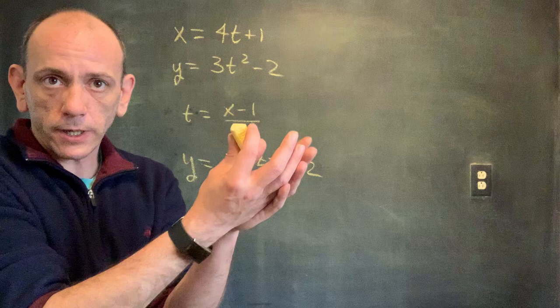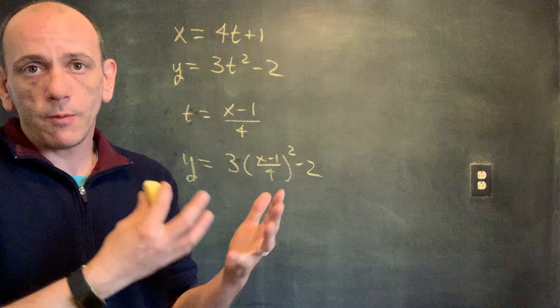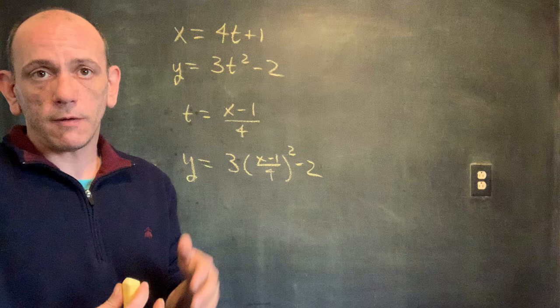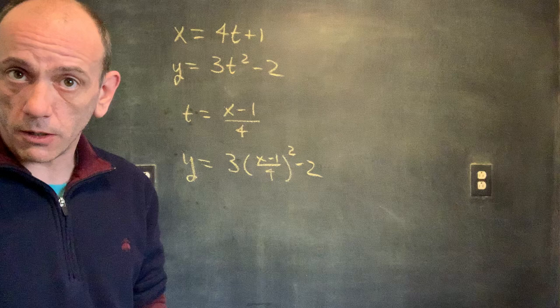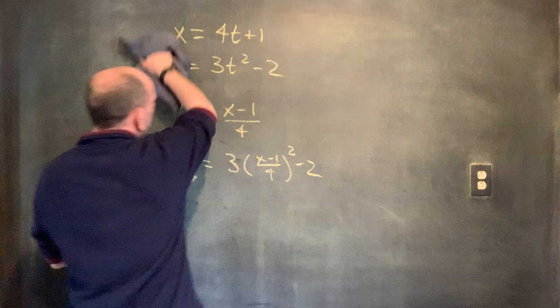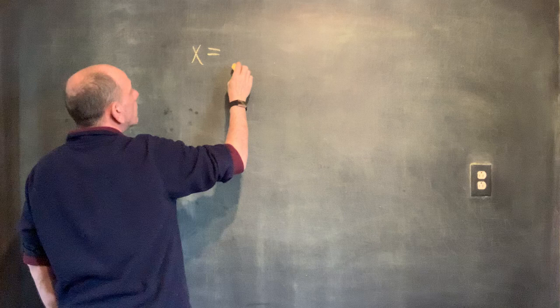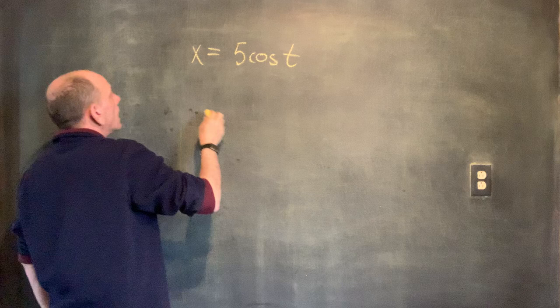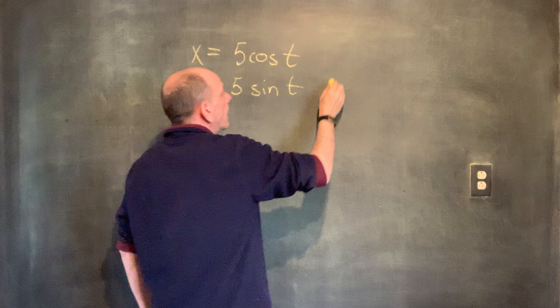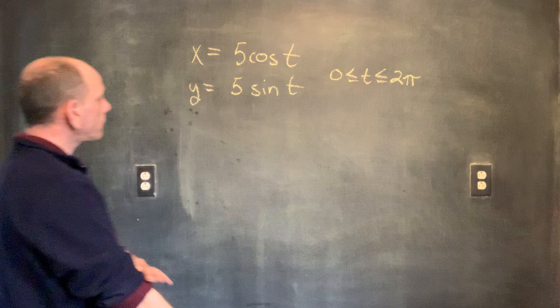That's going back and forth between the two. If we have a rectangular equation, we can parameterize it basically any way we want. If we have parametric equations, going back to rectangular is a matter of eliminating the variable. Sometimes it can be trickier, and we might have to rely on something we know. For example, consider the parametric equations X equals 5 cosine T and Y equals 5 sine T, with T between 0 and 2π.